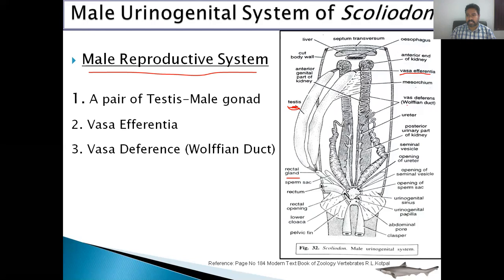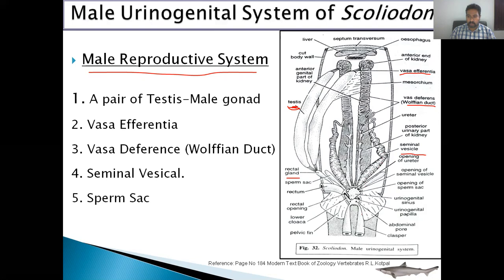The vas efferentia form the vas deferens or Wolffian duct, which is present in the anterior kidney. This Wolffian duct or vas deferens comes down and near the posterior kidney forms a swollen structure called the seminal vesicle. This seminal vesicle stores the spermatozoa. The vas deferens and vas efferentia secrete nutritional fluid for the spermatozoa. The seminal vesicles open into the intromittent organ called the clasper. This clasper has an apopyle and a hypopyle, and it is the intromittent organ of Squalus, present near the pelvic fin. This clasper deposits the spermatozoa in the cloaca of the female. There is one more structure called the sperm sac of unknown function.